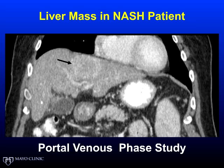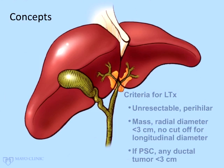Just because a patient has cirrhosis does not mean that the mass is absolutely HCC. Our criteria established several years ago for liver transplantation were that the mass had to be unresectable and perihilar. I'll show you how we look at the size of the lesion, and we consider all cancers in PSC to be unresectable.